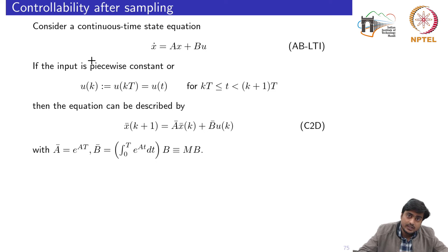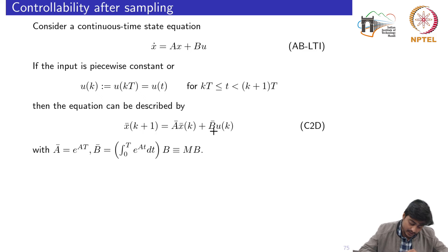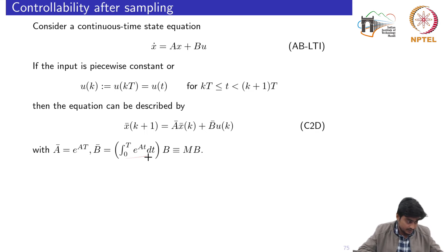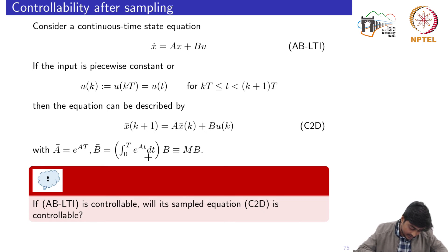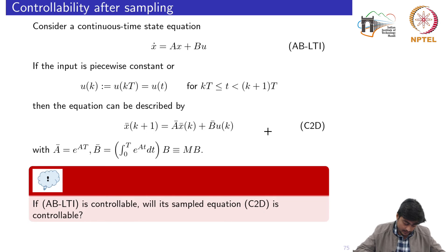We studied two ways of doing the discretization. The first is using the Euler method, and the second by assuming u(k) is a piecewise-constant signal between the time interval. When we assume u is piecewise constant, we obtain the discrete-time representation where A-bar equals e to the power A times T, and B-bar equals M times B, where M is the corresponding integral term.